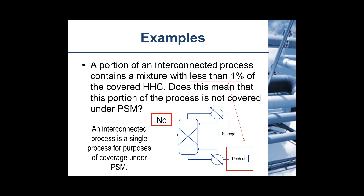A portion of an interconnected process contains a mixture with less than 1% of the covered HHC. Does this mean that portion is not covered under PSM? OSHA regulations state that an interconnected process is a single process for purposes of coverage under PSM. A process is either covered or not based on whether the weight of one or more highly hazardous chemicals in any portion of the process meets or exceeds the threshold quantity in Appendix A. When determining the threshold quantity, only HHC present in a mixture at a concentration greater than or equal to 1% by weight should be counted. The portion below the threshold does not contribute to the total weight of the chemical in the process.